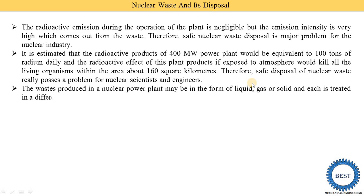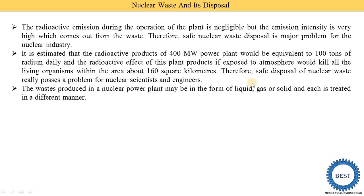The waste produced in a nuclear power plant may be in three forms: it may be liquid, gas, or solid, and each is treated in a different manner. The liquid waste is disposed of in one way, and for gas or solid waste the disposal methods are different. Now we understand in detail how the solid, gas, and liquid waste are treated.